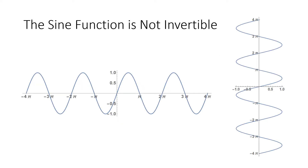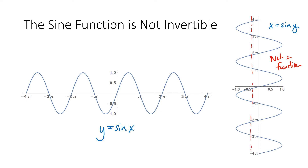Unfortunately, that doesn't work for the sine function. On the left is the graph of y equals sine of x, and on the right is the reversed relationship x equals sine of y. The problem is that x equals sine of y is not a function — it fails the vertical line test. If a vertical line crosses the graph more than once, it's not a function. In this case, x equals sine of y is spectacularly not a function; a vertical line intersects the graph infinitely many times.